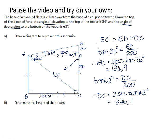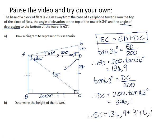We know, we wrote on this relationship to begin with, that EC is equal to ED plus DC. So therefore, EC will be 134.9 plus 376.1, which is equal to 511 meters. So therefore, the height of the tower is 511 meters.